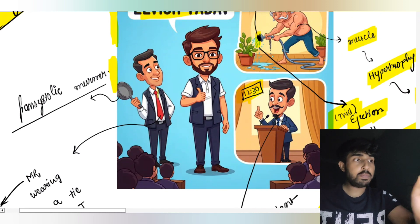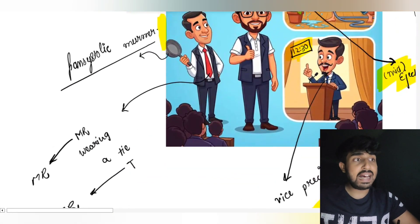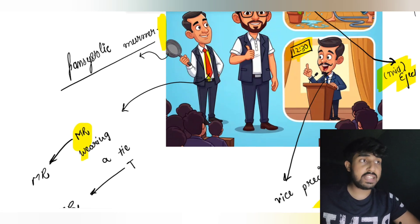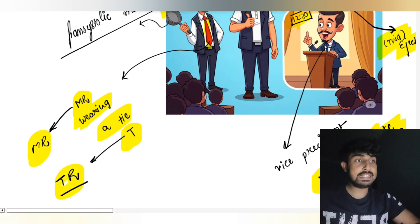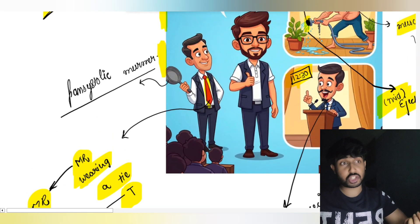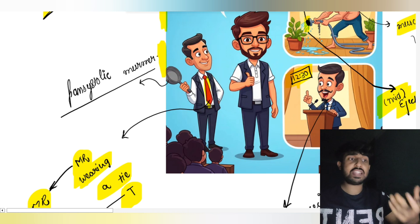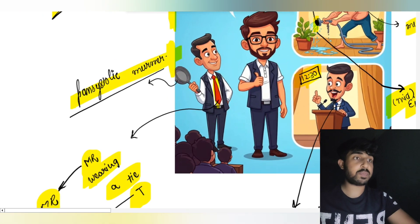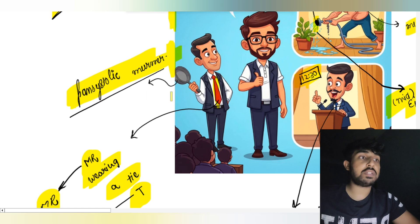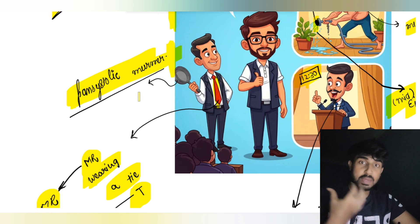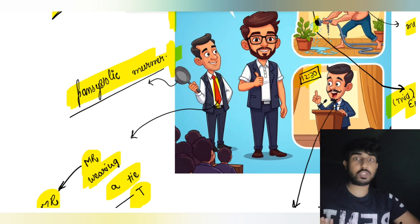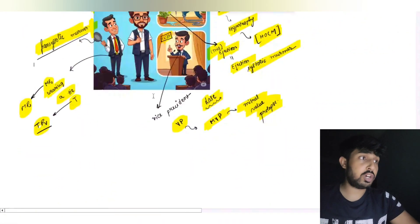Behind Elvish, a mister is standing who is wearing a tie. Mister represents mitral regurgitation (MR), and the tie represents tricuspid regurgitation (T). This mister is holding a pan, and that pan represents pan-systolic murmurs — meaning the murmur is consistent throughout the entire period of systole.